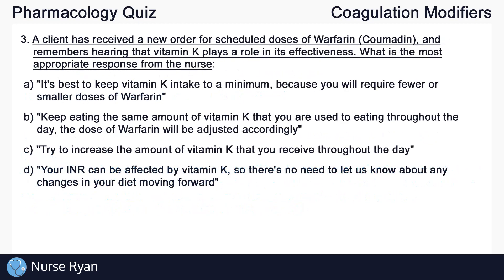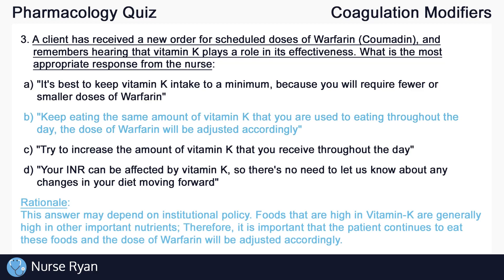Question number three: A client has received a new order for scheduled doses of warfarin or Coumadin and remembers hearing that vitamin K plays a role in its effectiveness. What is the most appropriate response from the nurse? The answer here is B: keep eating the same amount of vitamin K that you are used to eating throughout the day. The dose of warfarin will be adjusted accordingly. Foods that are high in vitamin K are generally high in other important nutrients, so the patient should continue eating these foods and the dose of warfarin will be adjusted accordingly.